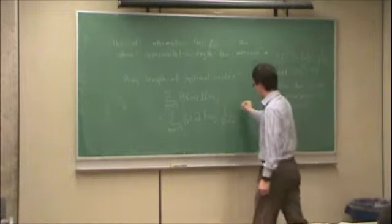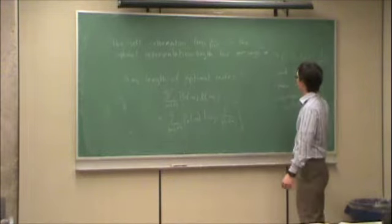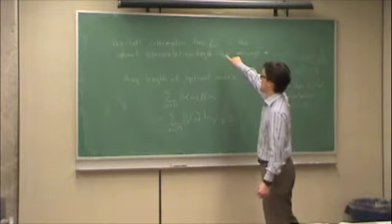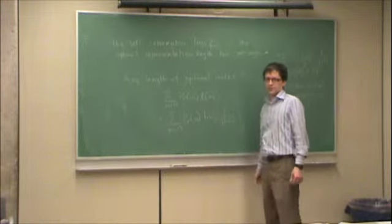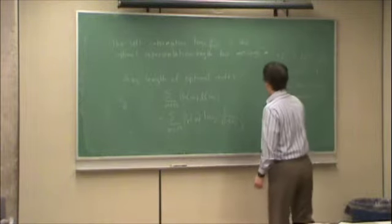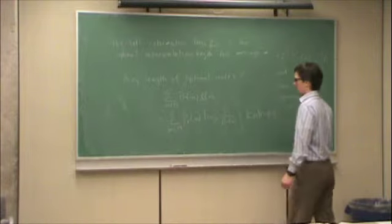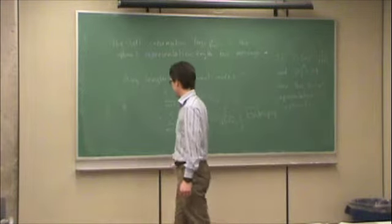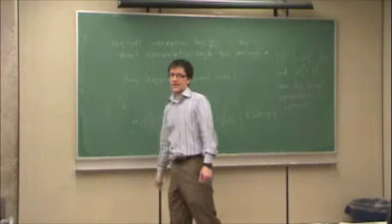So therefore, this quantity would be the average, if I carefully assign to each message its representation of optimal length, then this would be the average length of the optimal code. So it turns out this has a special name, and that is entropy. And this has a special symbol, in this case it would be h of the message set, the entropy of the message set m.